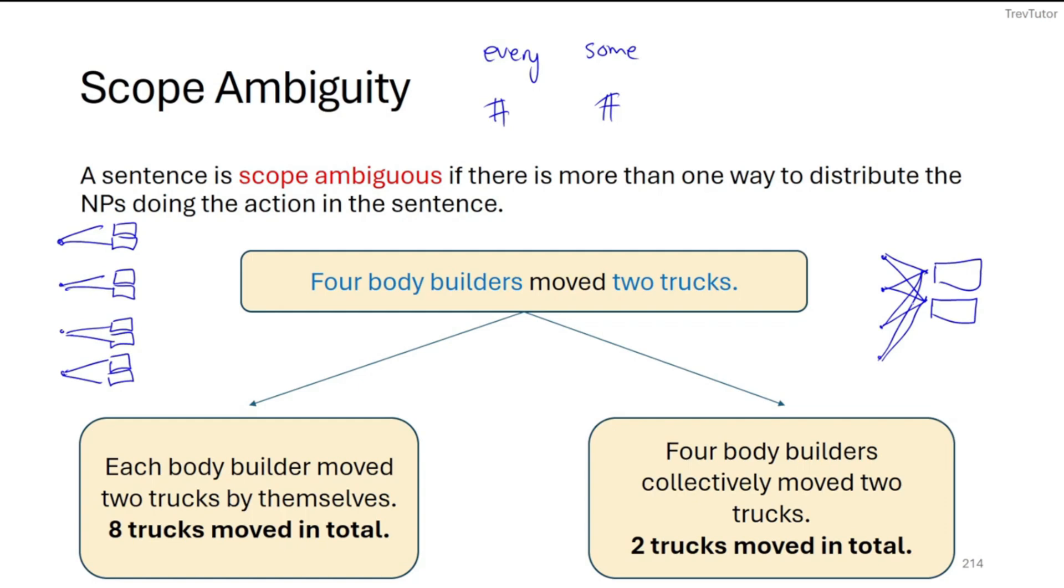But if you just remember the distribution of every and some or numbers, you're able to identify scope ambiguity.